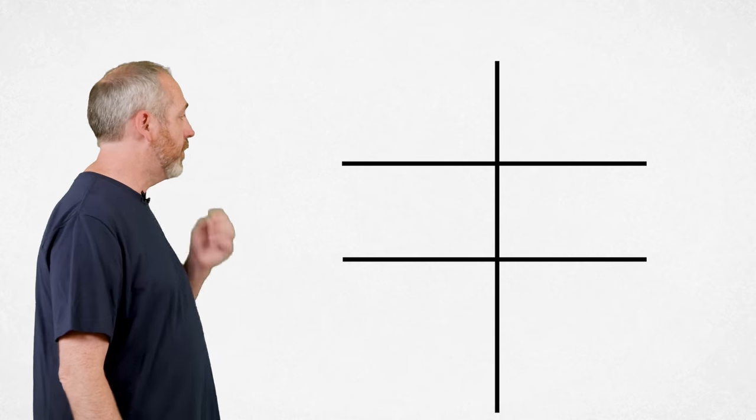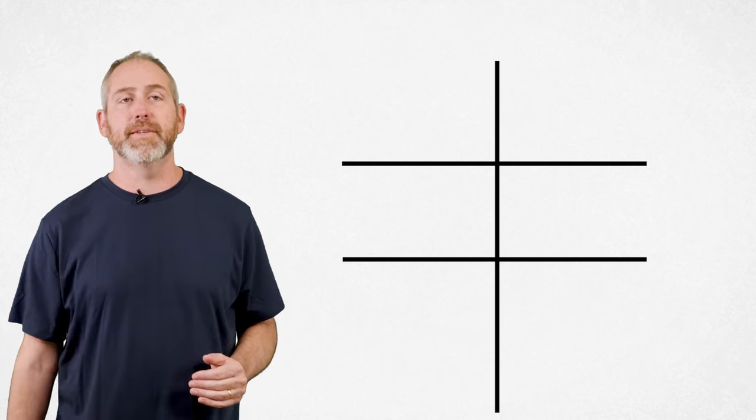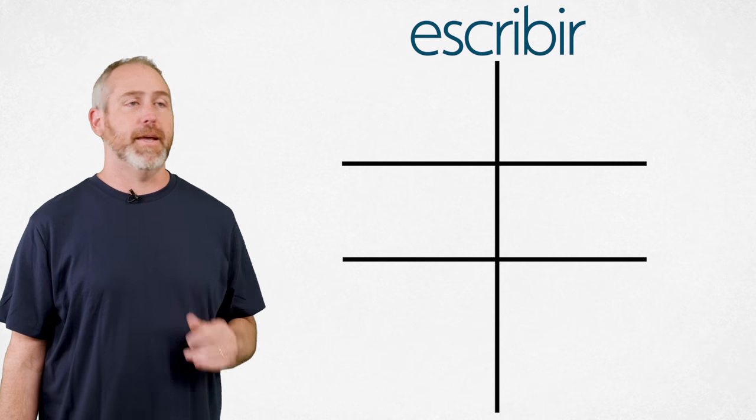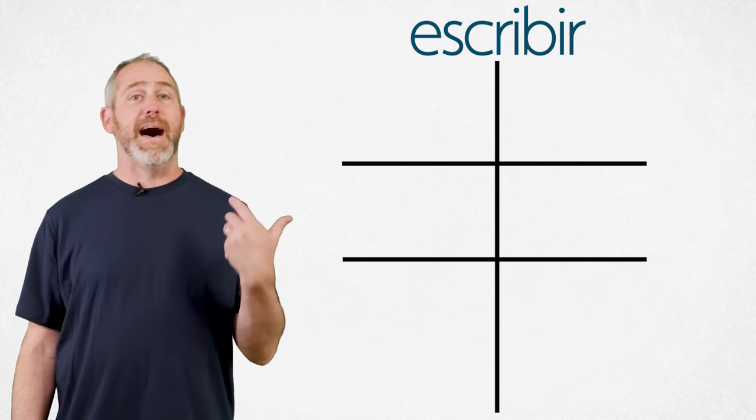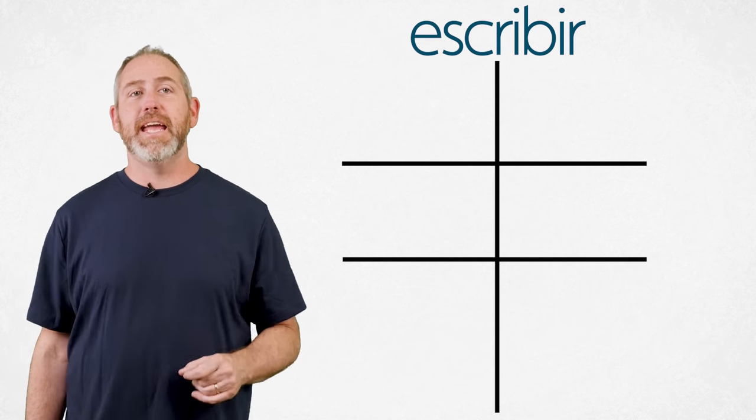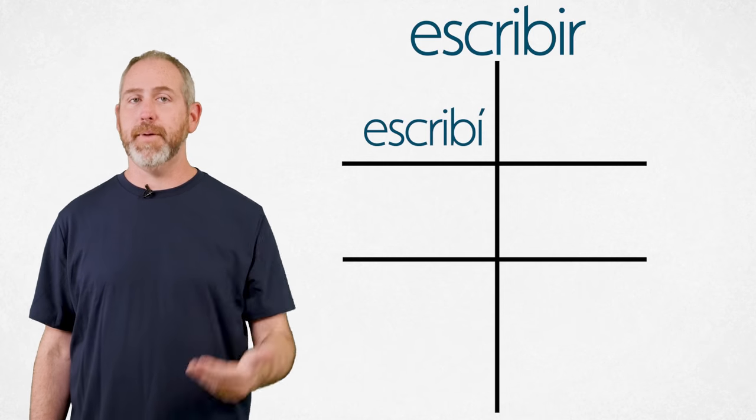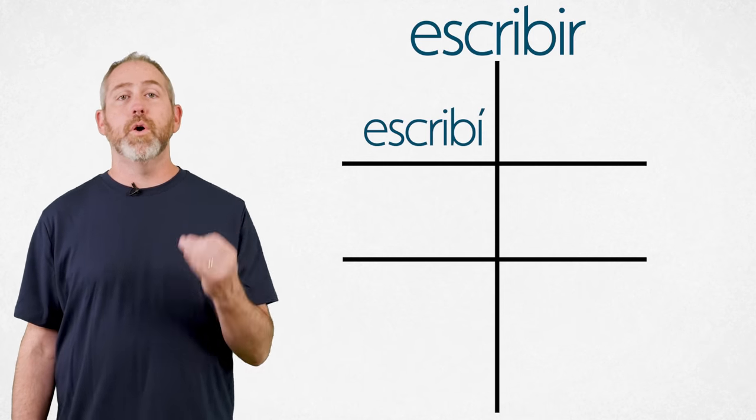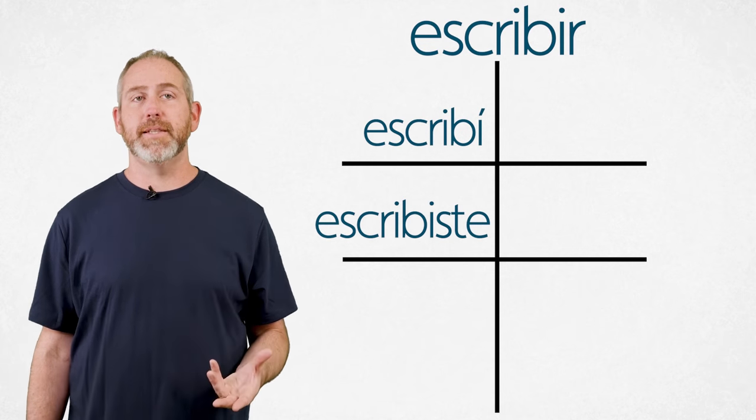Now let's look at those endings for an IR verb, just for visual and context, okay? Escribir means to write. To write. So I write, or I wrote, let me say it that way. I wrote, is yo escribí. Yo escribí. You wrote, tú escribiste. Tú escribiste.